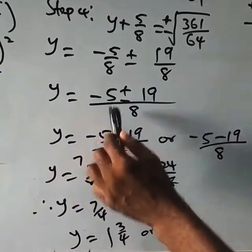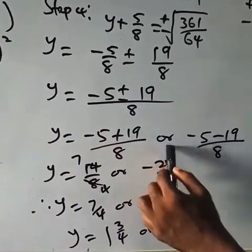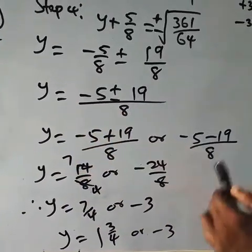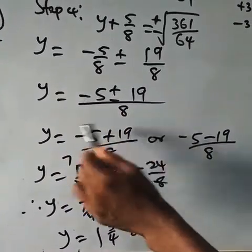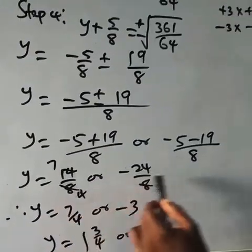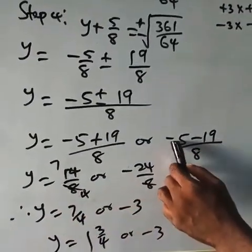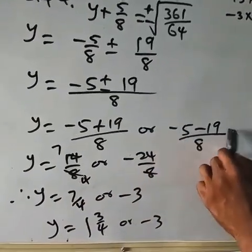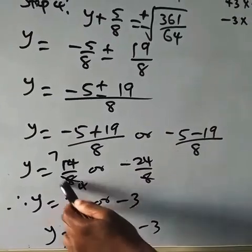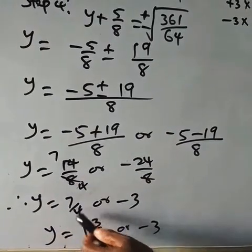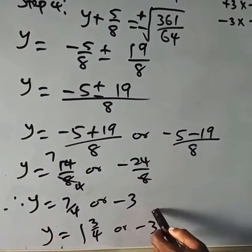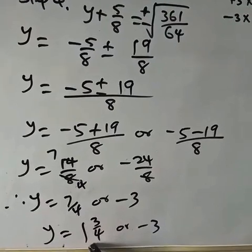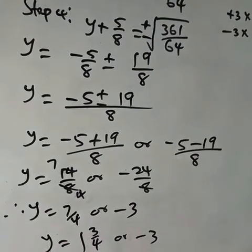So y equals minus 5 plus 19 over 8, or minus 5 minus 19 over 8. That gives 14 over 8, or minus 24 over 8, which simplifies to 7 over 4 or minus 3. y equals 7 over 4 or minus 3.